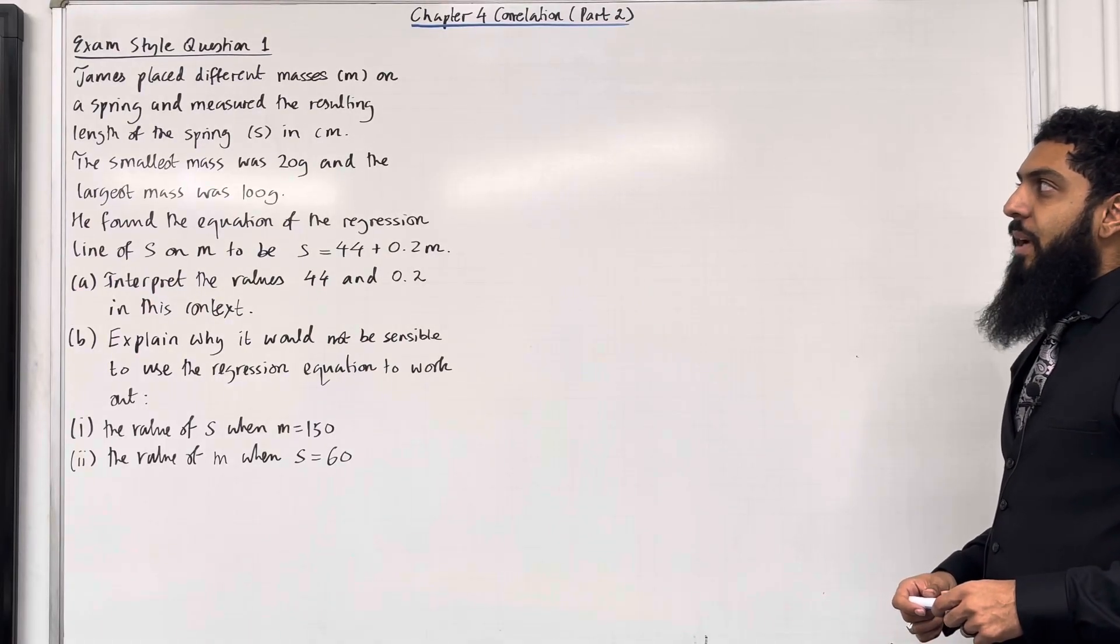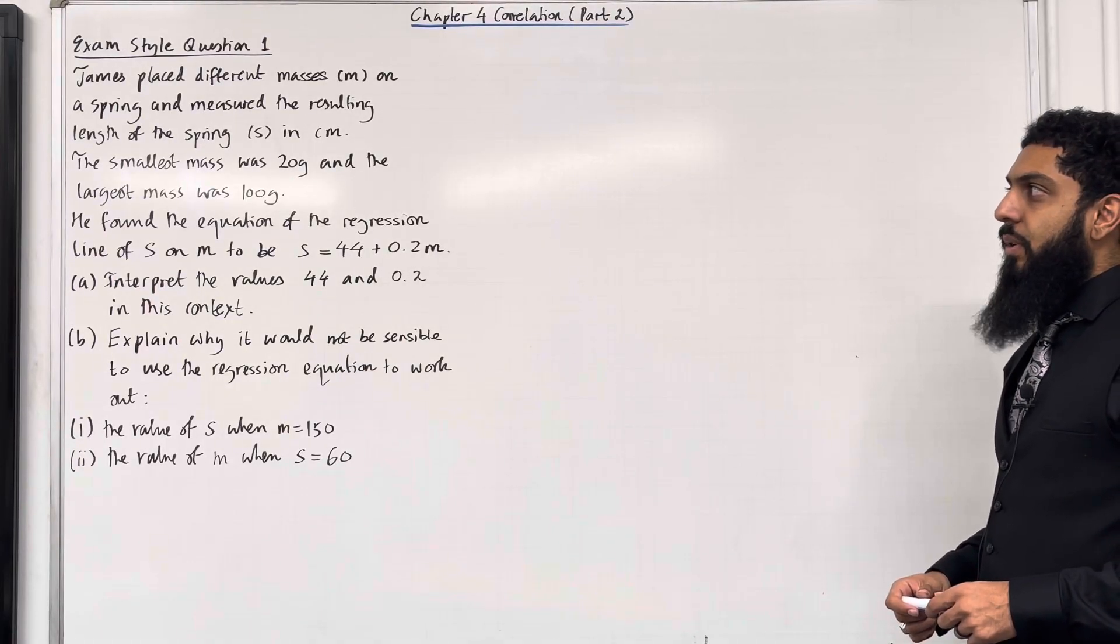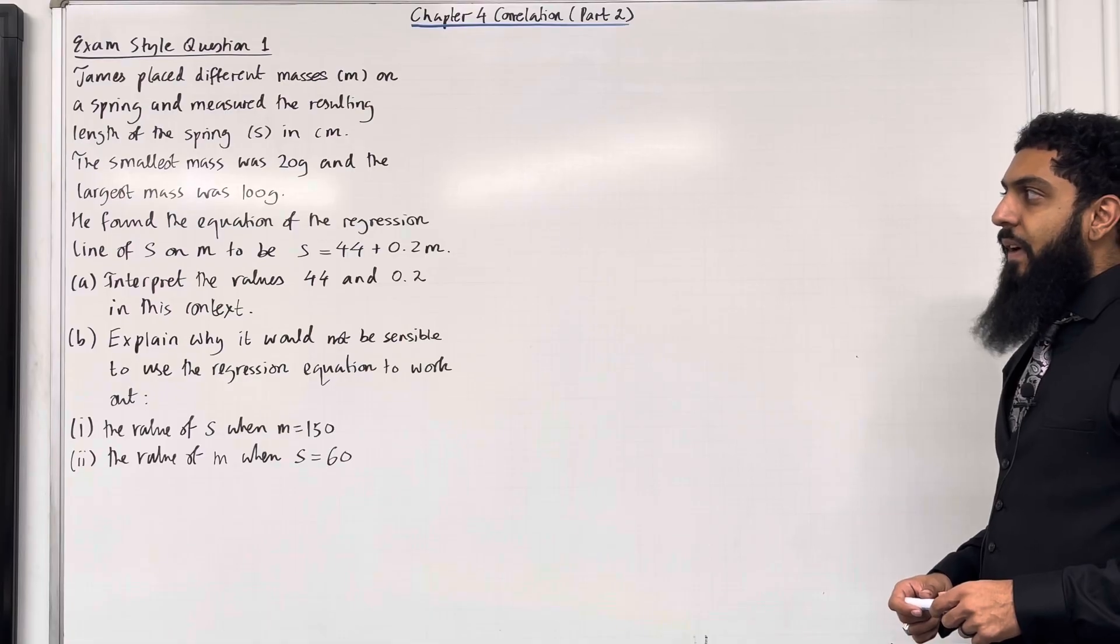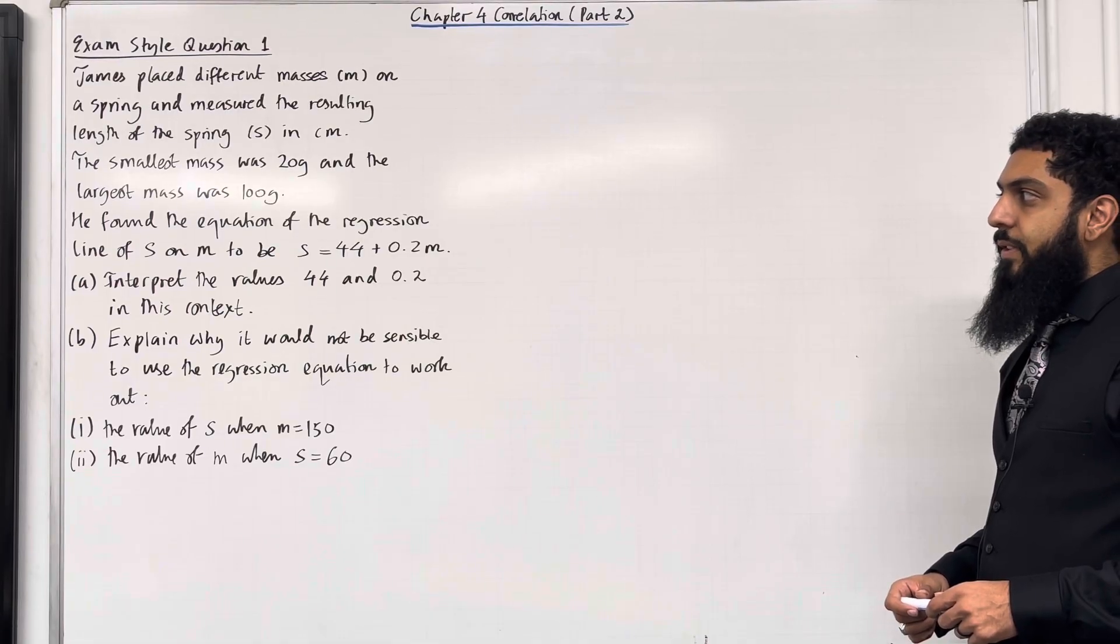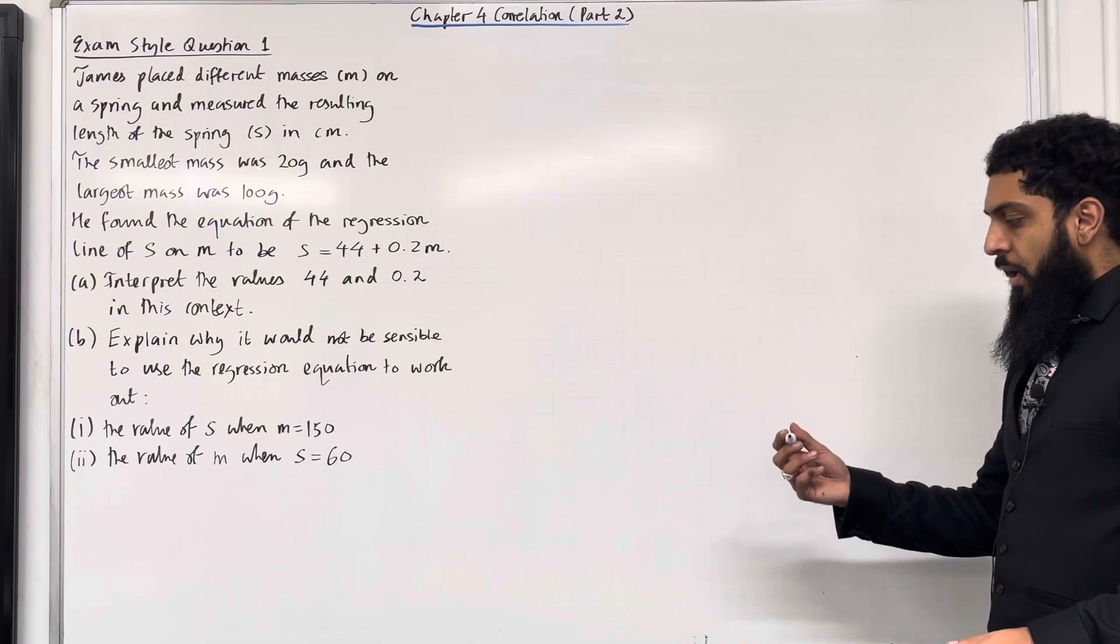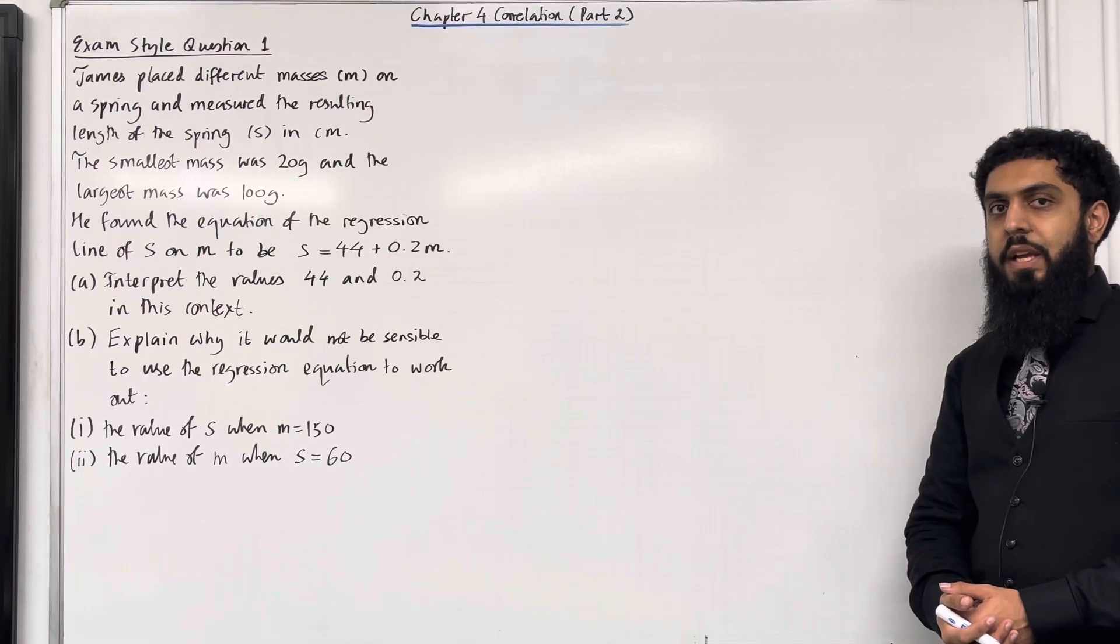James placed different masses, m, on a spring and measured the resulting length of the spring, s, in centimetres. The smallest mass was 20 grams and the largest mass was 100 grams. He found the equation of the regression line of s on m to be s = 44 + 0.2m. Part A, interpret the values 44 and 0.2 in this context. Our interpretation has to be in context.